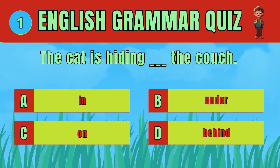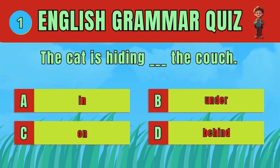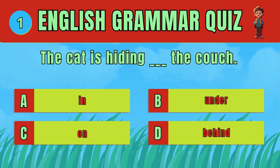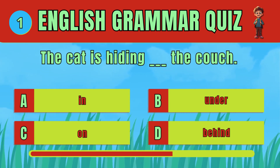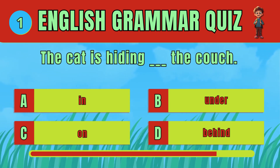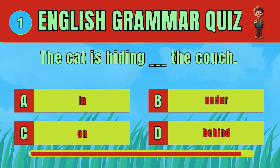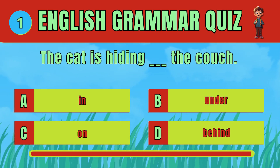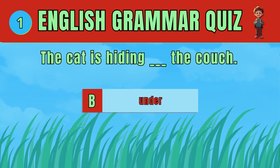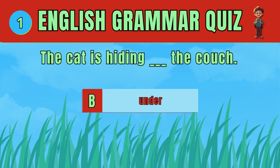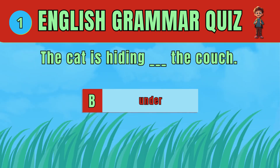Choose the correct preposition to describe where the cat is hiding. The answer is: under. The cat is hiding under the couch.